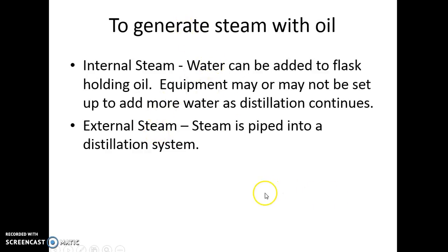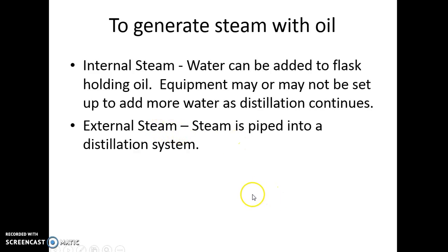There are two types of steam distillation. One is called internal steam distillation — you add an addition funnel to a round bottom flask, which allows you to add more water as the water distills away. Then there's external steam, where they actually pipe steam into the distillation system. We don't have steam piped in, so we use internal steam distillation.